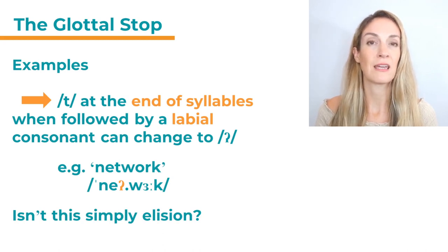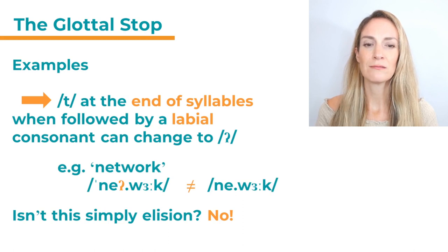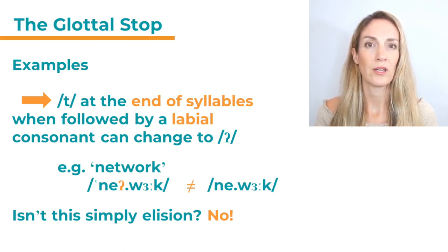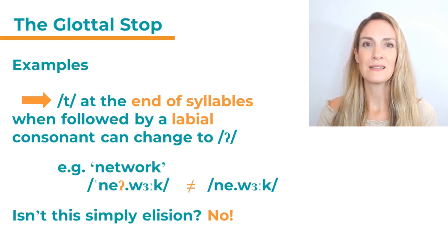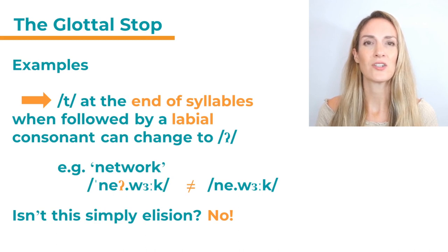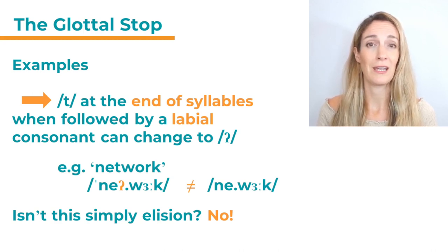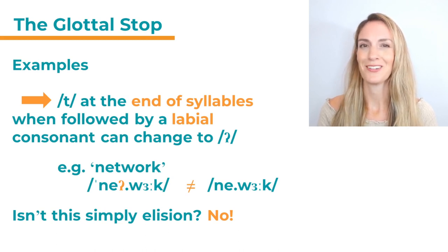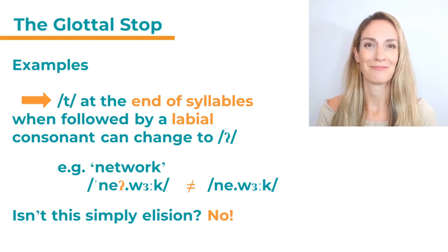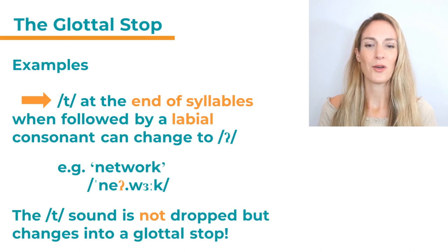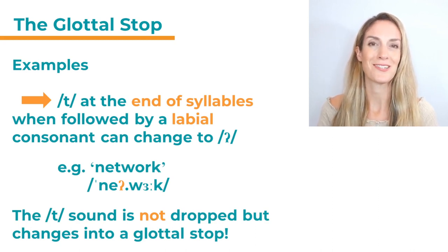Some of you might say — wait, isn't that just simply elision? The T disappears? No. If that were elision, it would sound like 'network' with no stop at all. But that's not what we say. It's 'network' — there's a little stop there, and that's the glottal stop. Let's listen: first with the T — 'network'; then with the glottal stop — 'network'; then incorrectly without any — 'network'. No, that's not correct. The first two options are correct and you can use either. The T sound is not dropped, it changes into a glottal stop — so this is not elision.